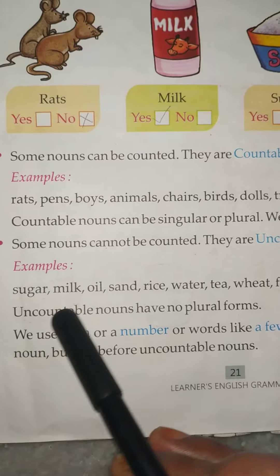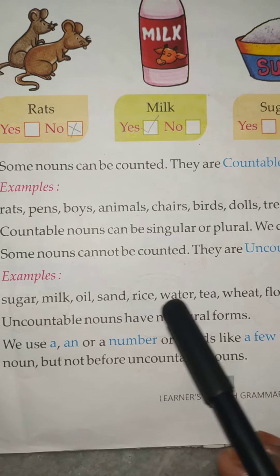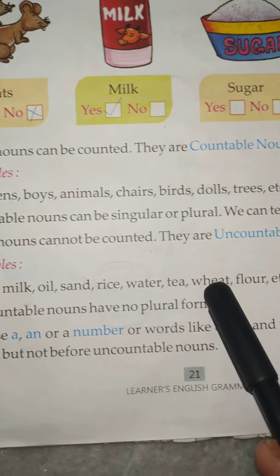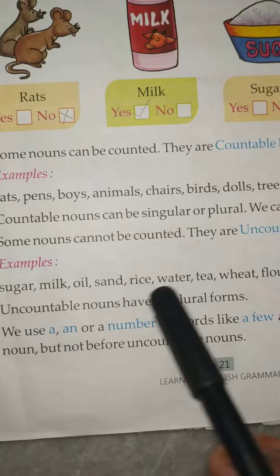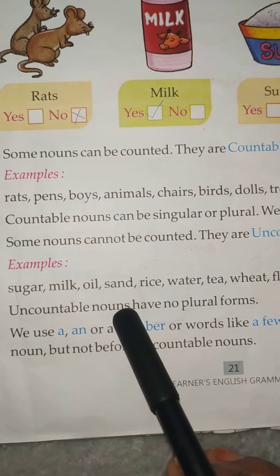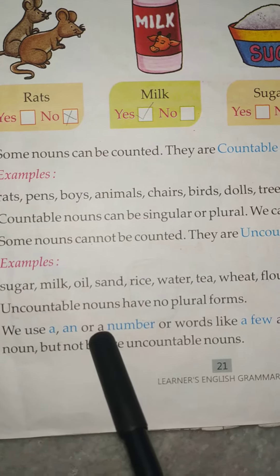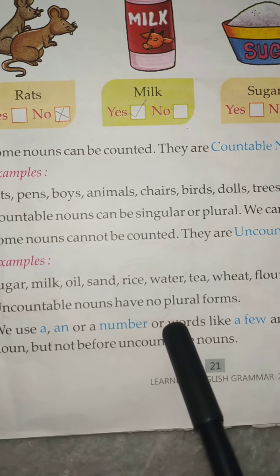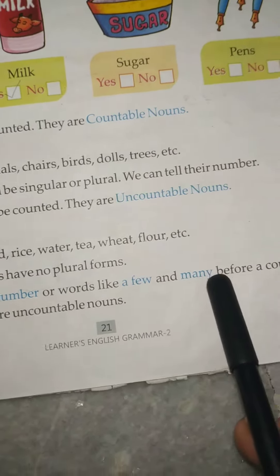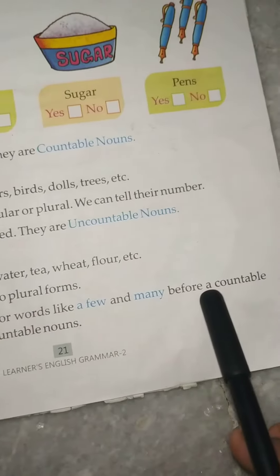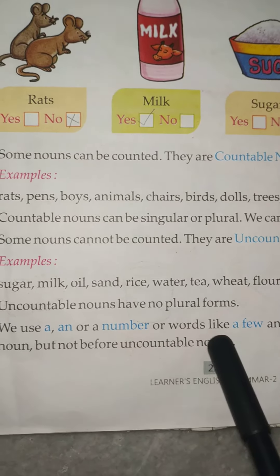Uncountable nouns: sugar, milk, oil, sand, rice, water, tea, wheat, flour, etc. We cannot count them. Uncountable nouns have no plural forms. We use a, an, or a number, or words like a few and many before a countable noun, but not before uncountable nouns.